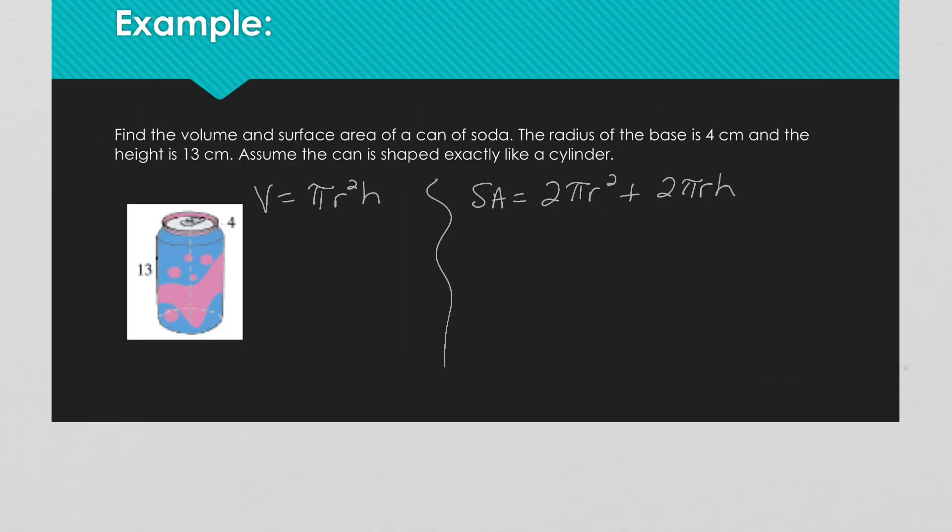Now we're going to find the volume and the surface area of a can of soda. The radius of the base is 4 centimeters, the height is 13 centimeters, and assume that the can is shaped exactly like a cylinder.